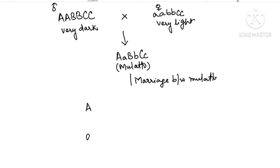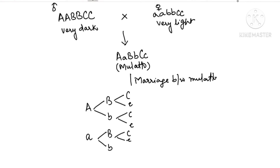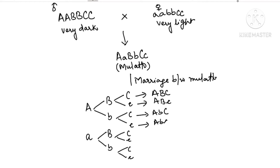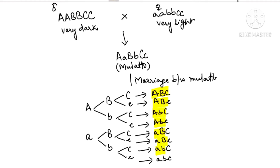Now, when selfing occurs — marriage between two mulattoes — we need to find the phenotype ratio. First, make the gametes using the fork-line method. Separate the two alleles at each gene, then combine. This gives eight types of gametes. If this is made by the male parent, the same eight types of gametes will be made by the female parent.